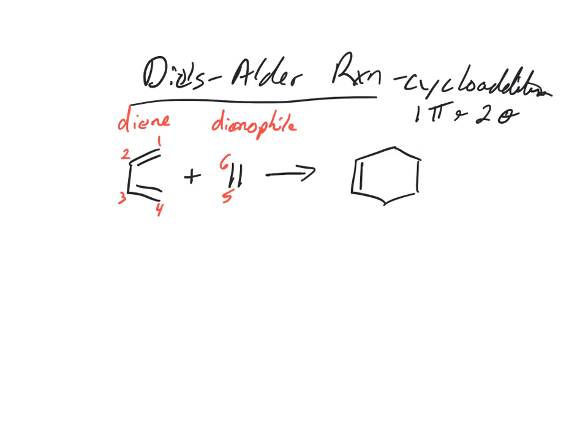And we start with three pi bonds and end up with one new pi bond and two sigma bonds. That's a cycloaddition.